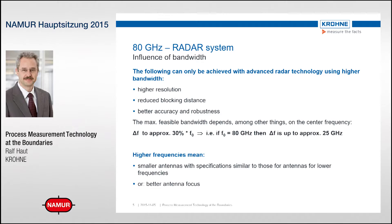The bandwidth of a center frequency plays an even bigger role than estimated. To achieve higher resolution, reduced blocking distance, better accuracy and robustness, advanced radar technology using higher bandwidth is required. There is a rule of thumb: bandwidth is approximately 30% of the center frequency. So with 80 GHz, the bandwidth can be up to 25 GHz.